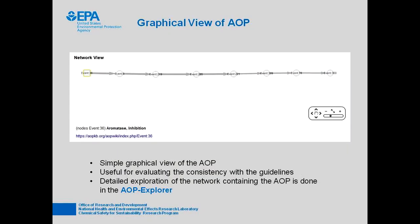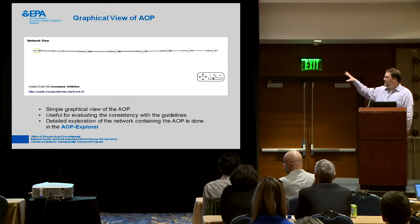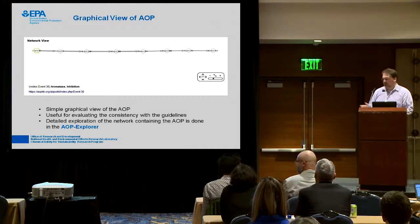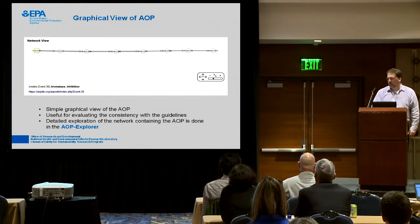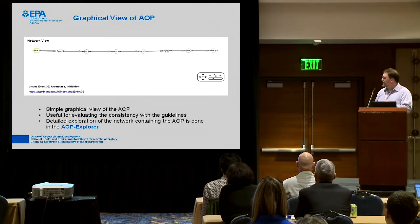We provide a graphical view of the AOP. The goal for any individual AOP is to have it look like a linear series of events, with possibly some indirect edges curling around it, but without a lot of branching and splitting in an ideal world for a single AOP. This view covers a single AOP, and the AOP Explorer that Ed will describe will talk about that in a broader network context.